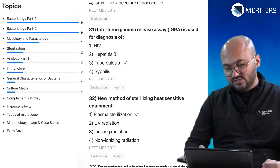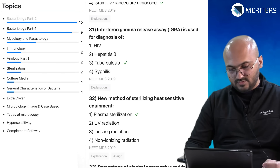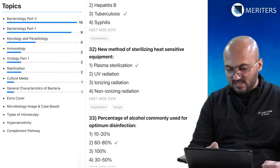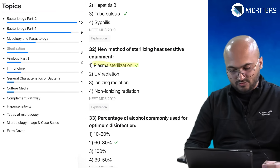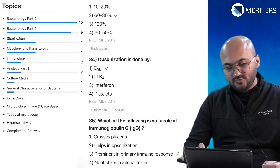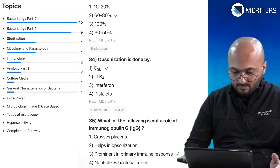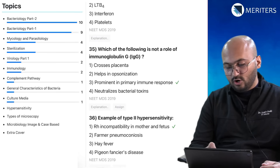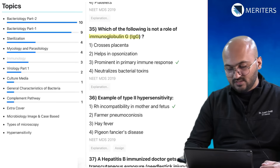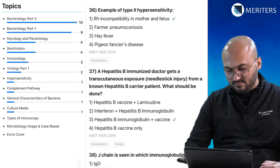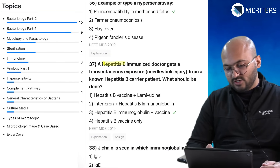New method of sterilizing heat-sensitive equipment — plasma sterilization — goes under sterilization. Concentration of alcohol against sterilization and opsonization are also covered. The first question for the complement pathway — which of the following is not a role of immunoglobulin G — is immunology, covering type 2 hypersensitivity reaction.